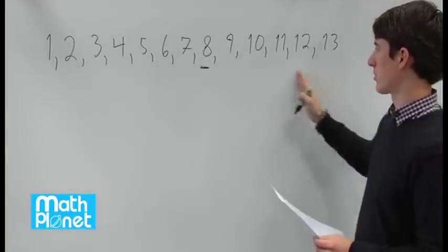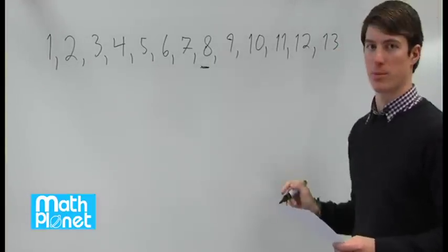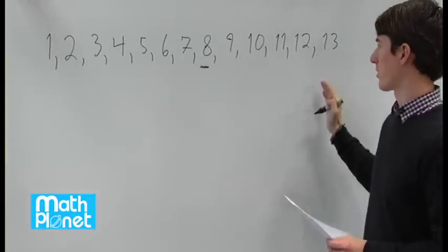So we can pick any eight consecutive numbers, sorry, six consecutive numbers, including the number eight, and the sum must be less than 40.